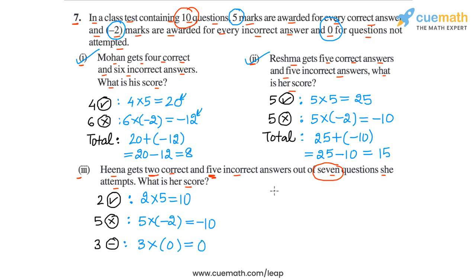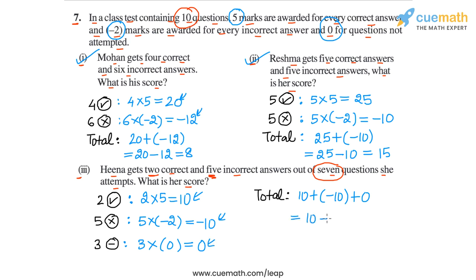Now let's calculate Hina's total score. The total will be 10 plus minus 10 plus 0 — that's 10, minus 10, and 0 added together. So this will be 10 minus 10, which is equal to 0. So 0 is Hina's total score.